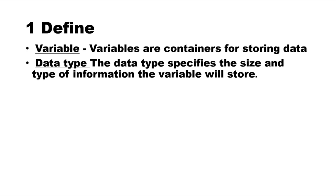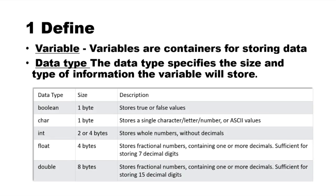The data type specifies the type of information the variable will store. In this case, a small character type and an integer type will be used.